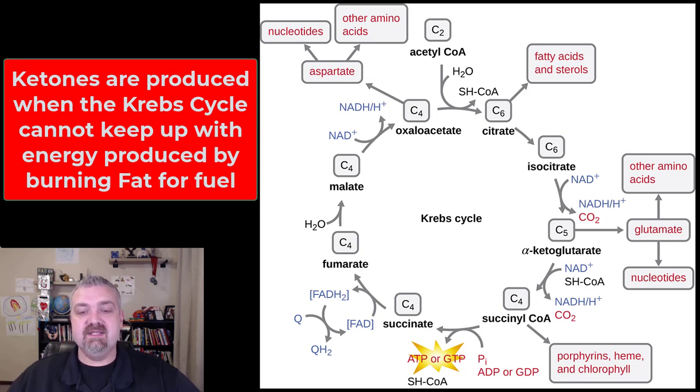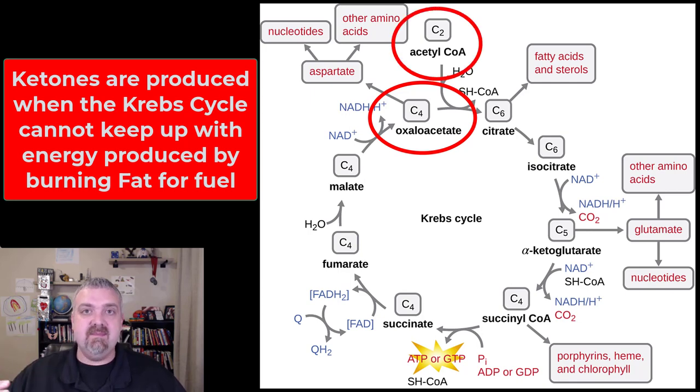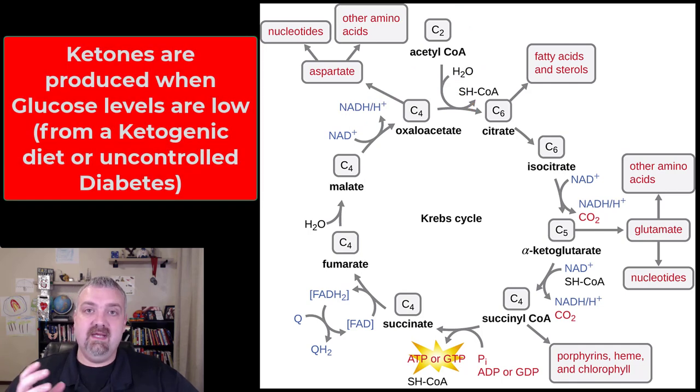Here we see the Krebs cycle. As long as you have enough oxaloacetate, that last step in the Krebs cycle, to meet the needs of the amount of acetyl-CoA that's being produced, the Krebs cycle is going to be responsible for the fuel. But if you have more acetyl-CoA than the Krebs cycle can handle, that's when ketone bodies are produced.